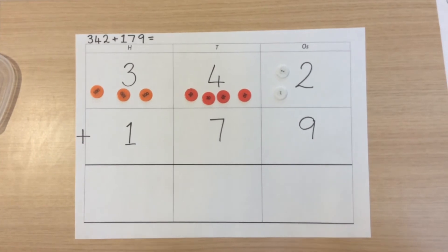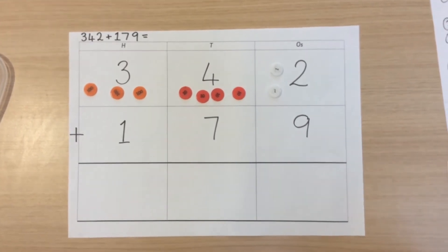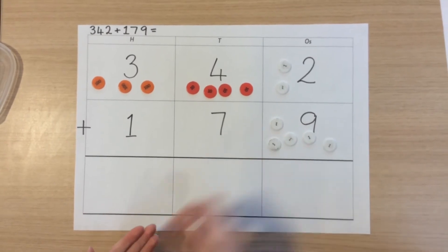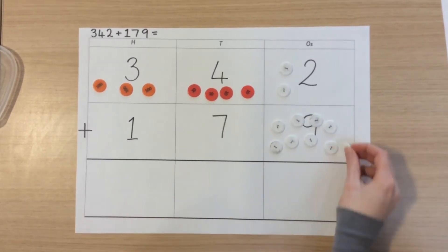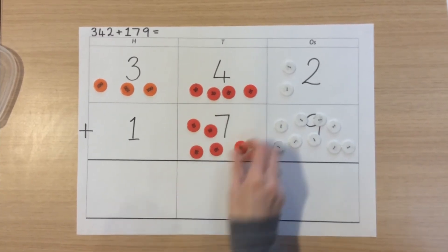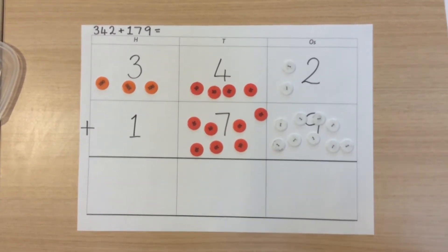As with other addition calculations, we'll do the same with the second number. In this case, nine ones, seven tens, and one hundred.